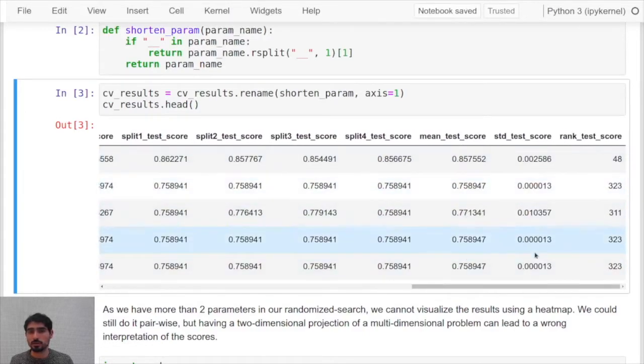You can also see the mean test score, the standard deviation, and the ranking position of how good or bad is this particular combination of parameters.